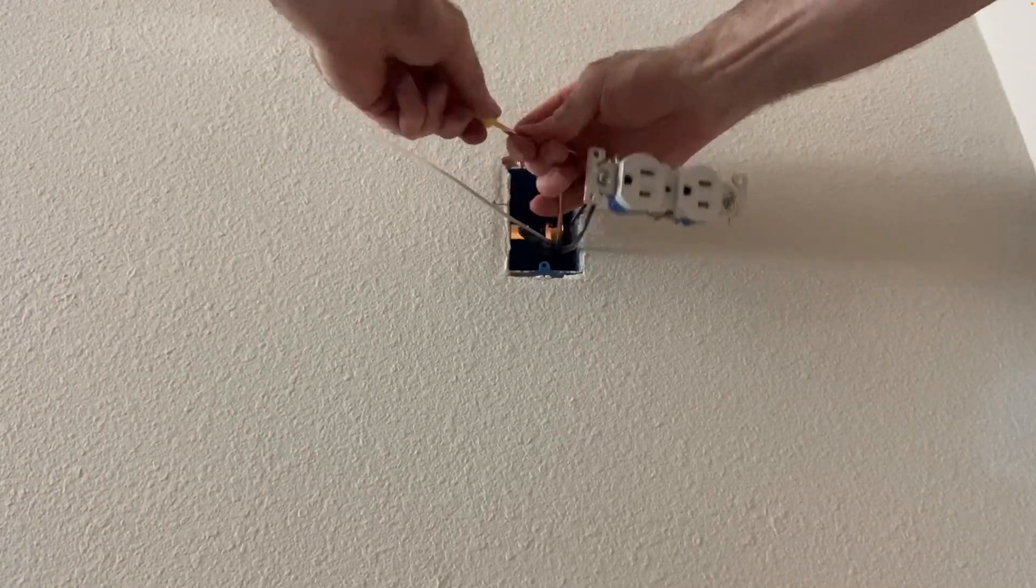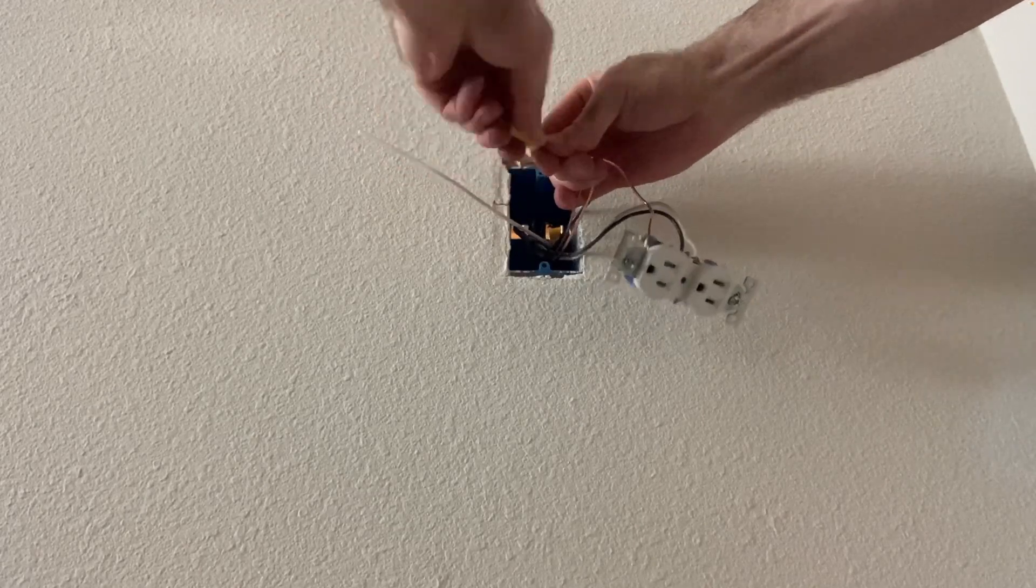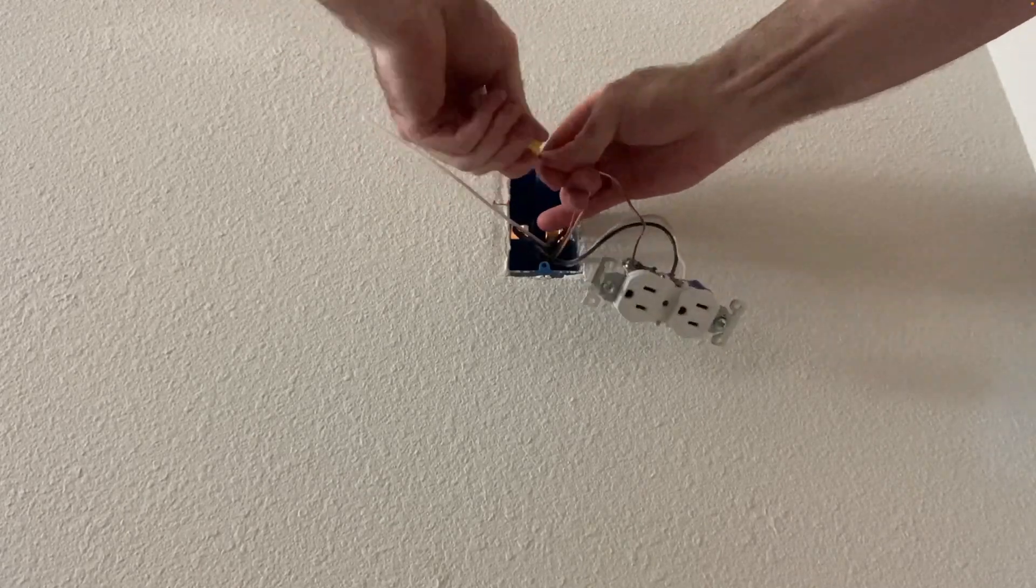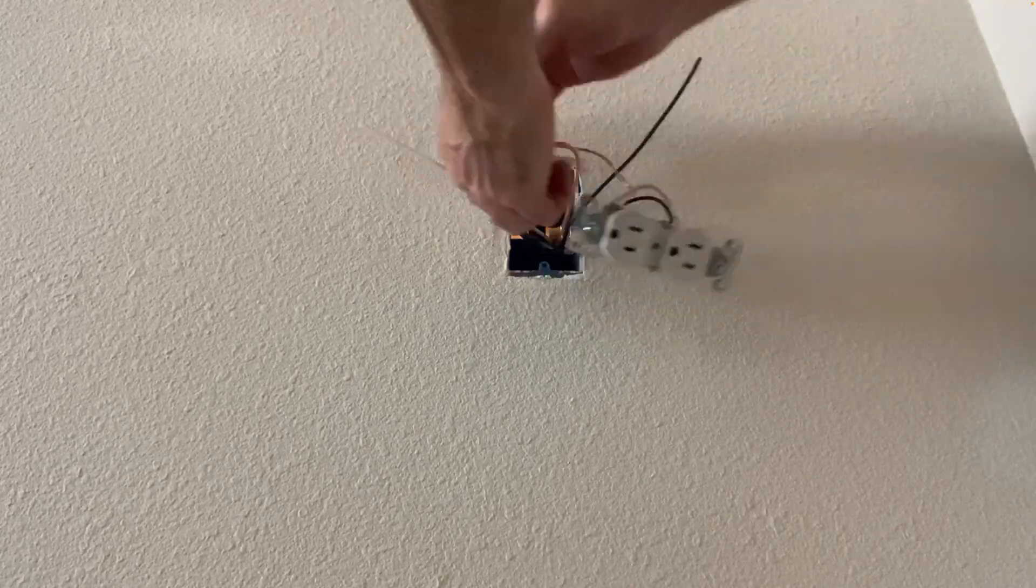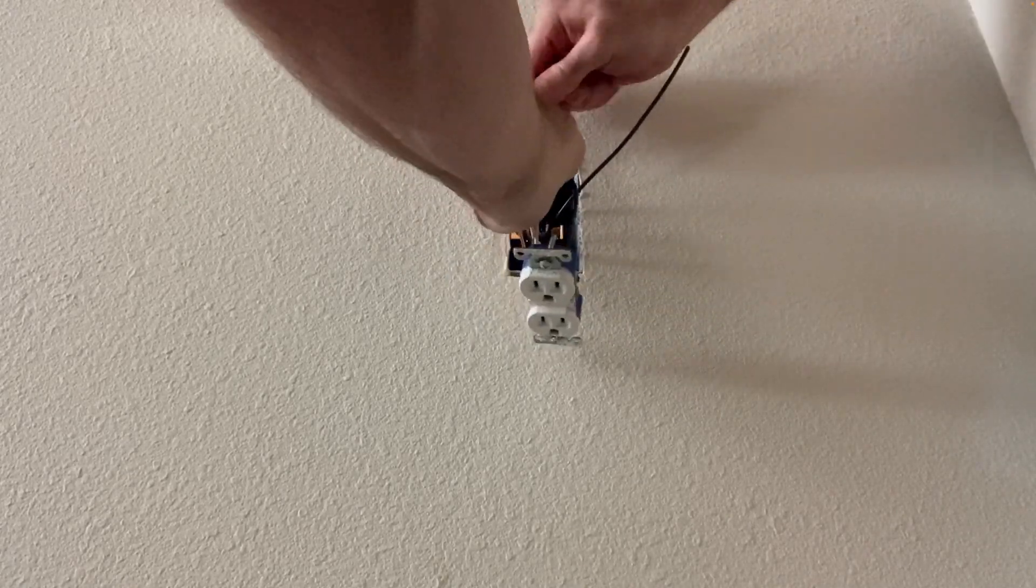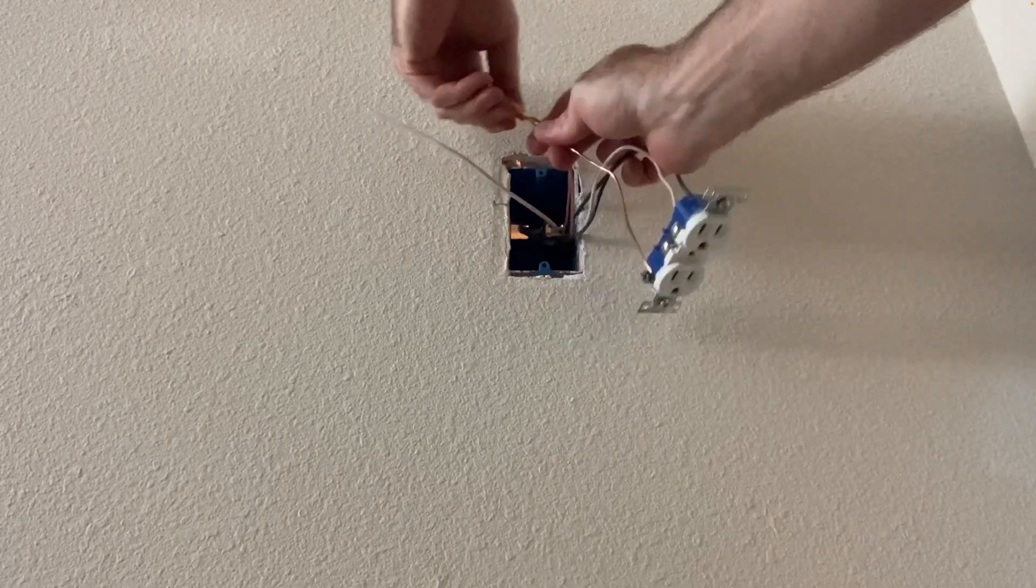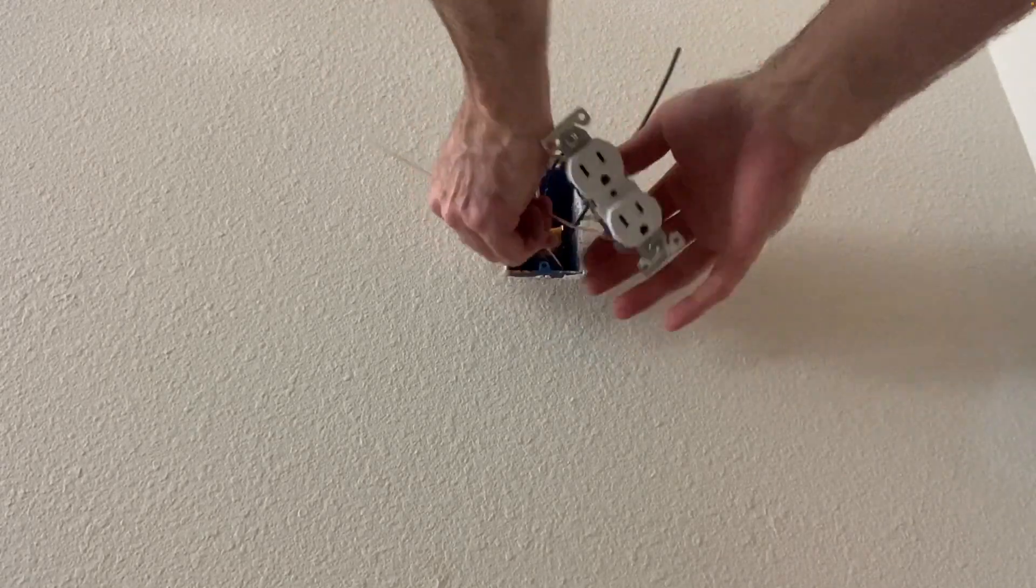Ideally you want to use a pair of lineman pliers to pre-twist those solid copper wires together. I didn't have those on me, so I had to cheat and just use the wire nut, but I got it done. Again, you can see we got three ground wires together.